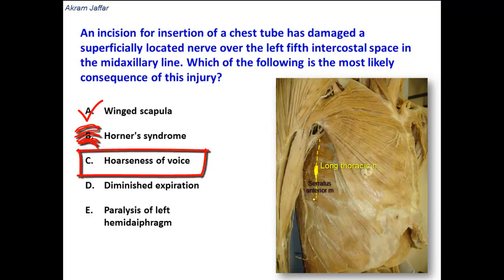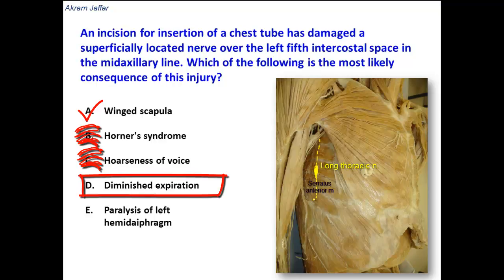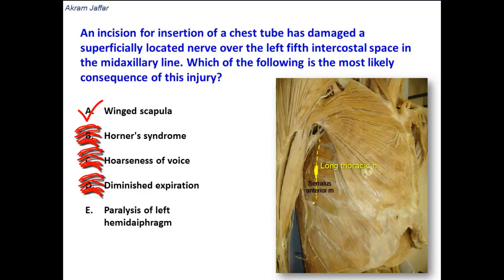Hoarseness of voice might result from a nerve injury, but in this case the nerve involved would be the recurrent laryngeal nerve, which is not superficial — it is located deep in the superior mediastinum or in the root of the neck. Diminished expiration is also unlikely, because expiration in general is a passive process — a passive recoil of the thoracic wall tissue. Even in forced expiration, the intercostal and abdominal muscles involved are supplied by intercostal nerves, which are deeply located.